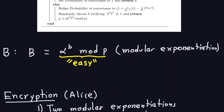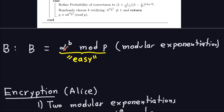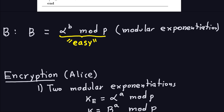Bob also has to compute the generator to the randomly chosen exponent B, where B is between 2 and P minus 2. This is a modular exponentiation, which is not difficult — you can use the square-and-multiply algorithm. So that's the setup on Bob's side, or a third party who actually does it.